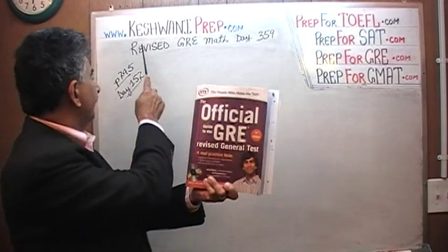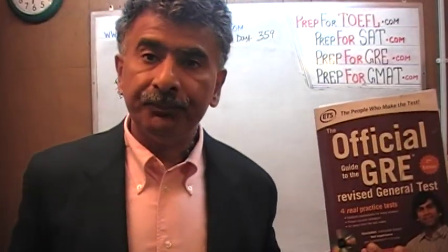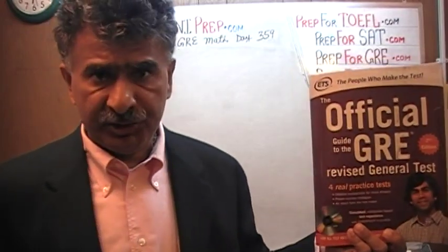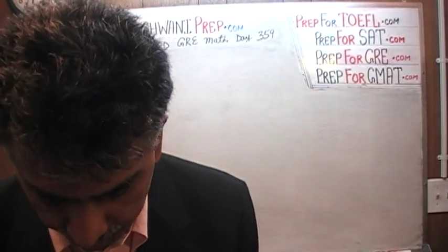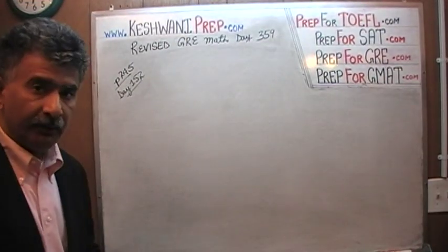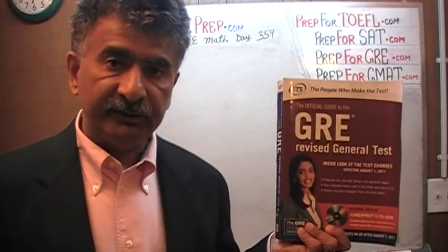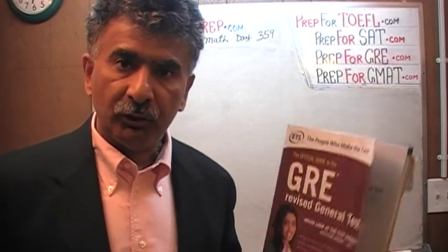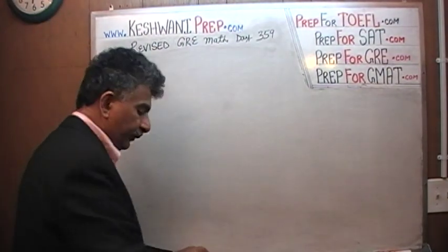Hello, my name is Keshwani. We are here to prepare for the GRE. We have been solving GRE math problems out of the Official Guide to the Revised GRE, second edition. If you do not own this book, purchase one immediately. The problem we are about to solve is on page 245. Today is lesson number 359. These problems on page 245 are the same ones from the first edition. We have already solved every single math problem from this book. Today we are doing problem number 18.